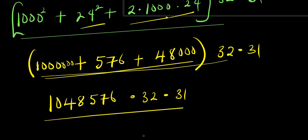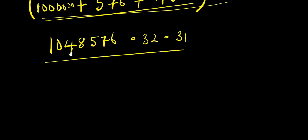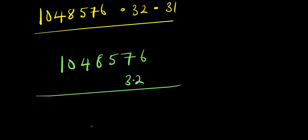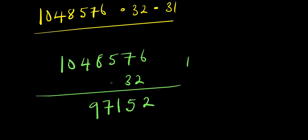Let's multiply 1,048,576 by 32 first. Carrying out the multiplication digit by digit: 2 times 1,048,576 gives 2,097,152. Then multiplying by 3 (tens digit of 32) gives 3,145,728 shifted one place. Adding those together gives 33,554,432.